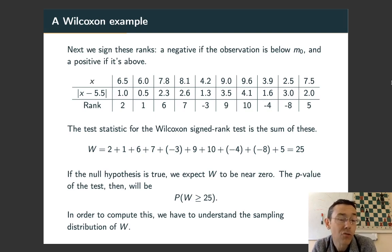Now, if the null hypothesis is true, we expect this to be about zero because the values above and the values below really should just be randomly signed. Then the p-value of the test is going to be the probability of getting a W that's more extreme. So, for this one-sided alternative, probability that W is greater than or equal to what we got, greater than or equal to 25. So, in order to compute that probability though, we actually have to understand the distribution of W. In other words, if the population median is what the null hypothesis said it is, what are all the possible values of W we could get just by random chance? And where does ours fall in that distribution?